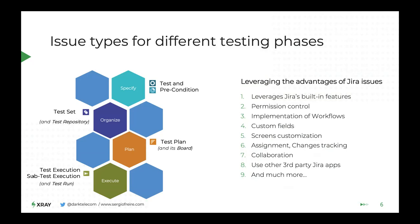Then we have the test plan for implementing a plan for your testing — it can be used to group results for multiple iterations. And each time you run a bunch of tests, you have what we call a test execution — a task for running a bunch of tests. All of these entities are issues in Jira, meaning you handle them the same way as other Jira issues: permissions, custom fields, customized screens, comments, and file attachments — all facilitating interaction and collaboration within the team.